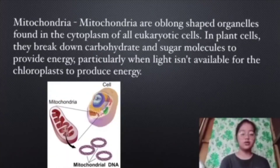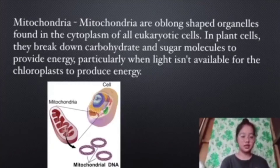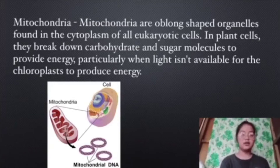Mitochondria. Mitochondria are oblong-shaped organelles found in the cytoplasm of all eukaryotic cells. In plant cells, they break down carbohydrate and sugar molecules to provide energy, particularly when light isn't available for the chloroplasts to produce energy.